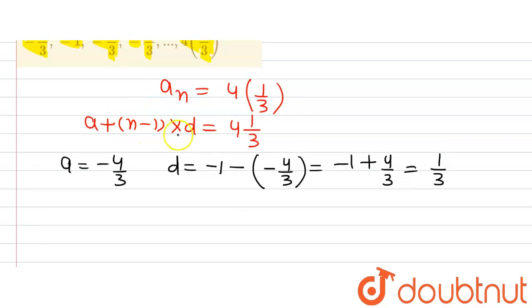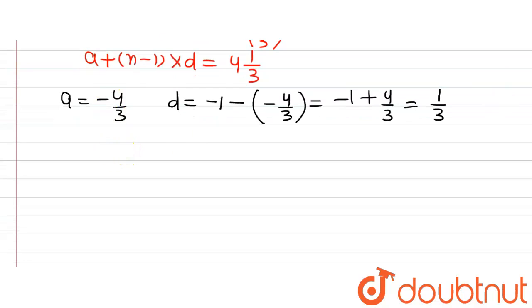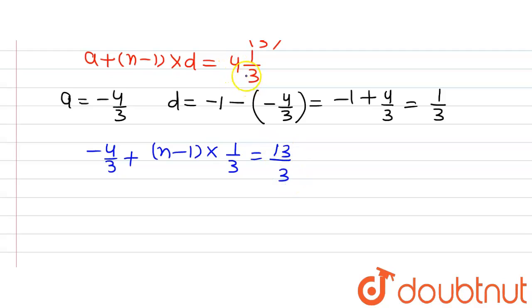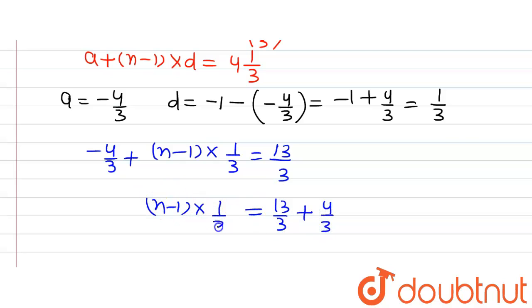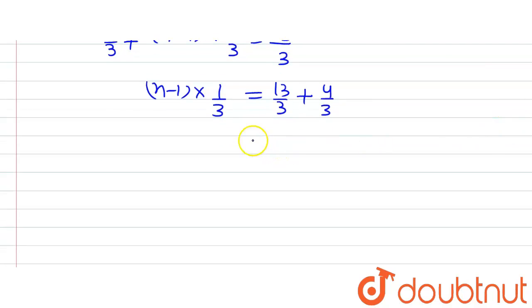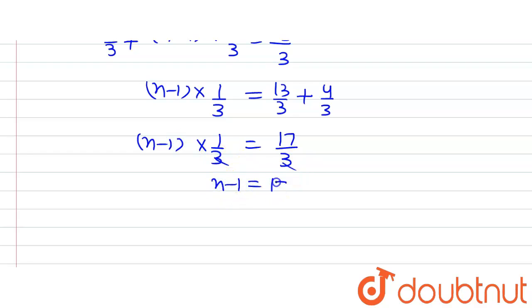Now putting the values into the formula for the last term: minus 4/3 plus (n minus 1) multiplied by 1/3 equals 13/3 (since 4 and 1/3 equals 13/3). So 13/3 plus 4/3 equals (n minus 1) multiplied by 1/3. Taking LCM, we get 17/3 equals (n minus 1)/3. The 3s cancel, giving n minus 1 equals 17, so n equals 18. There are 18 total terms in the AP.